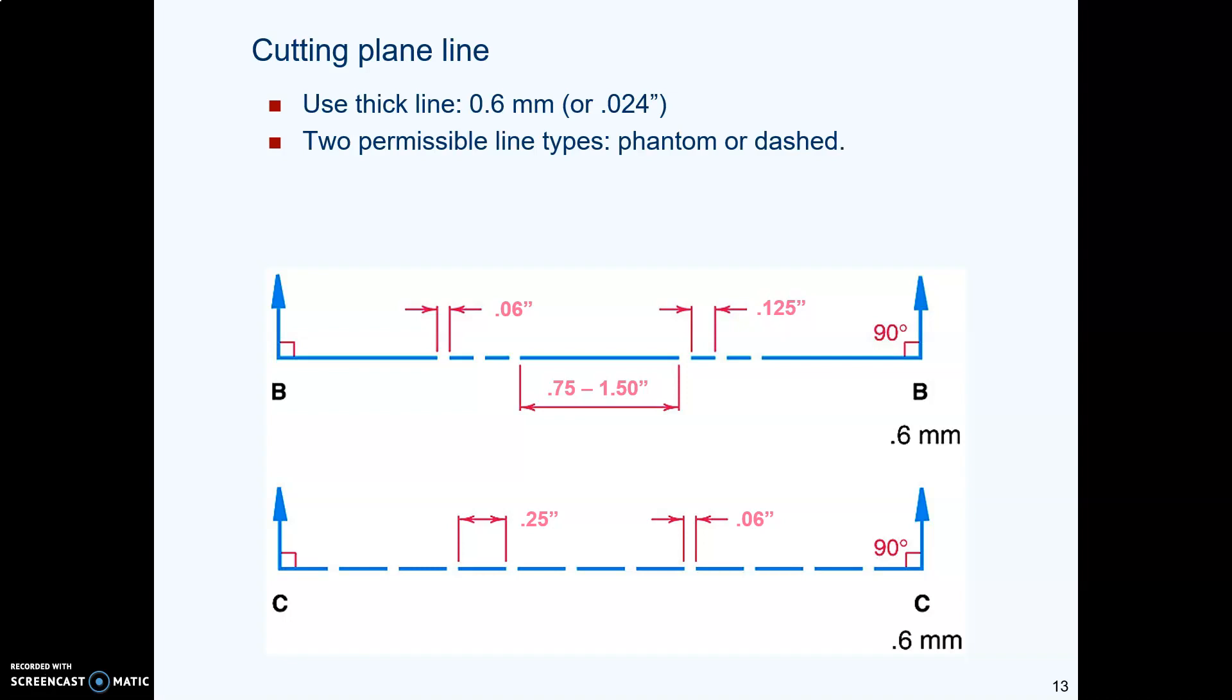Cutting plane lines are thick. They're the same thickness as object lines. And you're allowed to use either a phantom line type or a dashed line type. I prefer phantom. Notice that the dashed lines have dashes that are twice as big as a hidden line. Hidden line dashes are an eighth of an inch, aren't they? These are a quarter of an inch. So it's a different line type.